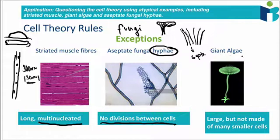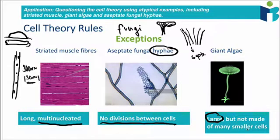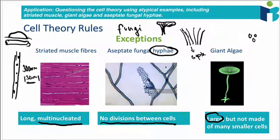Finally, we have the giant algae. The giant algae is a relatively large cell — quite large, but not composed of many smaller cells. This challenges the idea that organisms have to be composed of loads of smaller cells, because if we have one large cell in itself, that can be used to question that theory. You just have to remember these three different names of the exceptions, as well as a brief explanation of why each can be considered a challenge to cell theory.